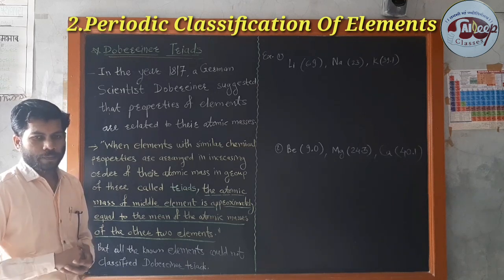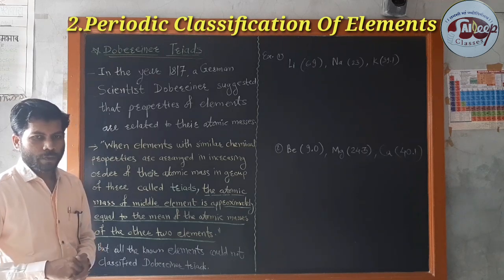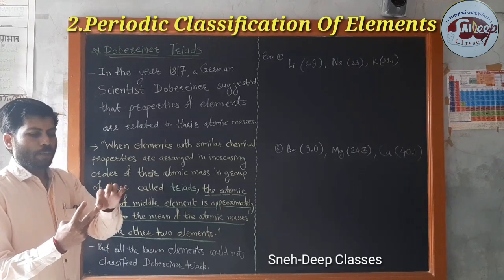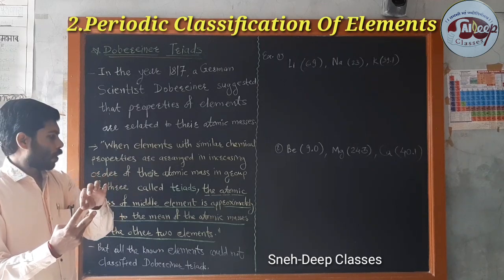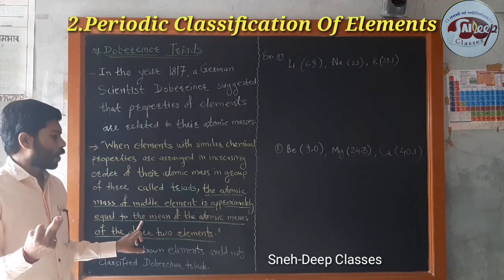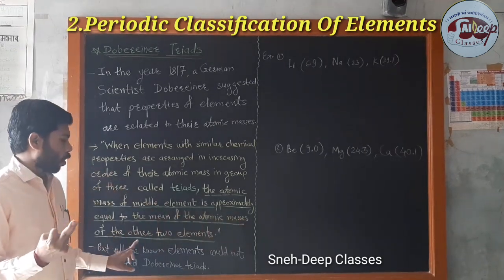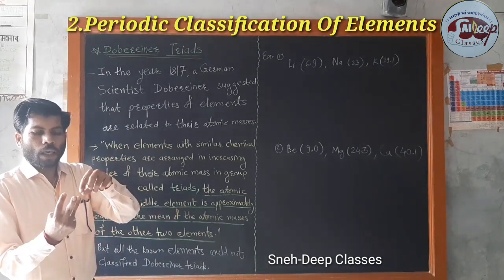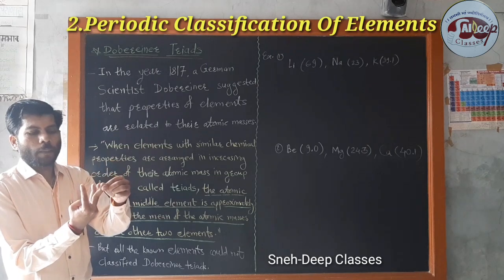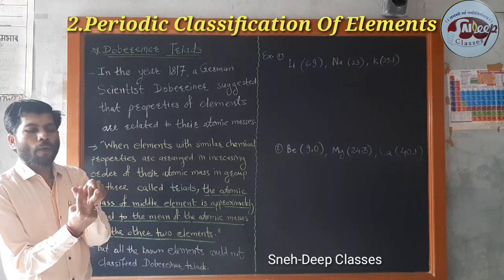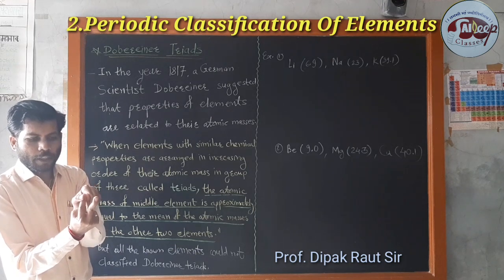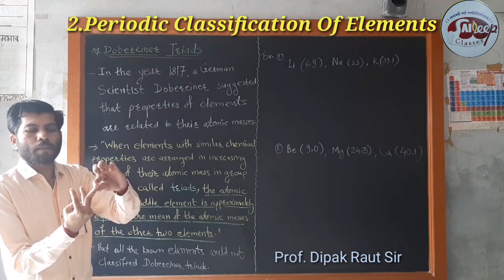Triads means three — similar to triangle, three corners. In a triad we have three elements: A, B, and C. The atomic mass of the middle element B is approximately equal to the mean of the atomic masses of the other two elements A and C. The average mass of A and C gives the atomic mass of the middle element B.